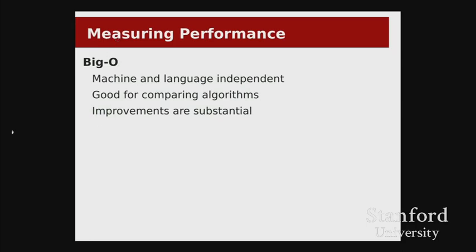So let's start talking about measuring performance. We haven't talked about performance at all really throughout this course. Most likely your exposure to talking about efficiency or runtime efficiency has been in terms of big O notation from a prior course. You talked about big O as a really convenient way to look at an algorithm and say how efficient it is in terms of how performance will change as the size of the input grows. Big O is really thinking about the asymptotic growth — if I pass my function an array that's twice the size, is it going to become twice as slow, or four times slower, or something like exponentially slower?